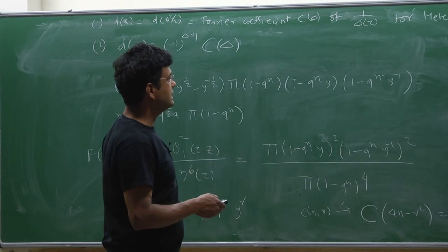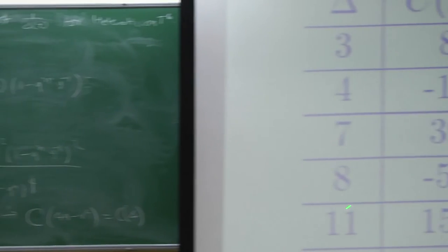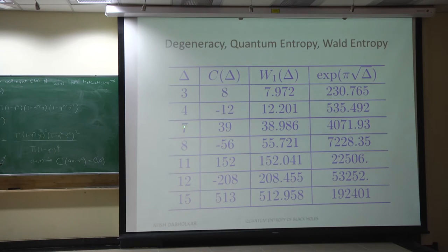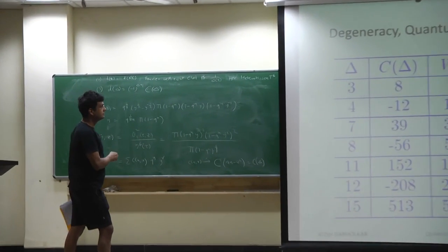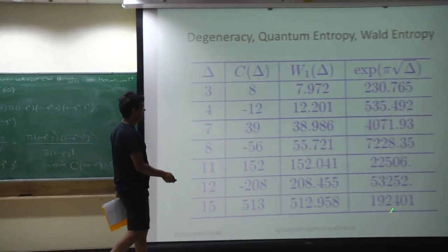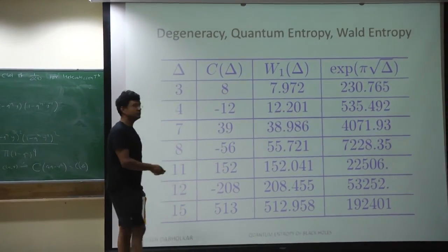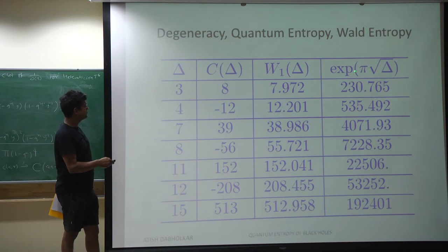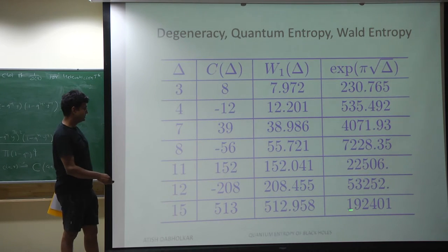The non-zero coefficients occur for Δ = 3, 4, 7, 8, 11, 12, 15, … with C(Δ) = 8, −12, … alternating in sign. Since 3 is odd, 4 is even, C also alternates, and therefore D = (−1)^(Δ+1) C(Δ) is positive, as required. If you computed the Bekenstein-Hawking entropy — which is area/4 = π√Δ — you can see that it's very far off compared to the exact integer. Our goal is to really get this number. If you resum all perturbation theory, you get a number very close, and more recent work involving Kloosterman sums reproduces from supergravity something extremely precise.